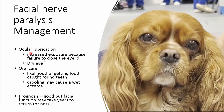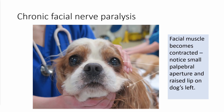Some people use propentofylline — theoretically it may be useful but this is very unproven — and betahistine is used in humans but there's no high quality evidence of effectiveness. For the facial nerve paralysis, we need to ensure ocular lubrication due to increased exposure from failure to close the eyelid, and good oral care because of food getting caught around the teeth with very floppy lips. Drooling may cause wet eczema in dogs with longer fur. Prognosis is good, but facial function may take years to return, or possibly not at all, leaving a contracted face. Overall for this dog the prognosis is good, but she may be left with facial nerve deficits for a long time.